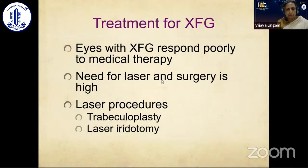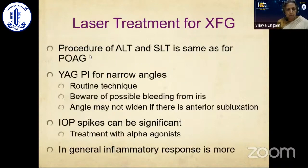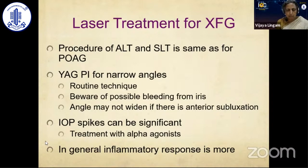Laser procedures for open-angle glaucoma typically involve trabeculoplasty. If there is associated angle closure due to lens-iris diaphragm shift, laser iridotomy should be considered. The ALT and SLT procedures are performed the same as in primary open-angle glaucoma. Similarly, ACPA is managed like any other angle-closure glaucoma. Importantly, IOP spikes can be significant and should be treated with alpha-agonists. Inflammatory response is greater in these eyes, so topical steroids following the procedure are important.